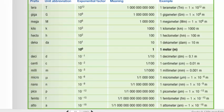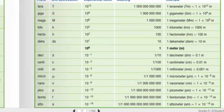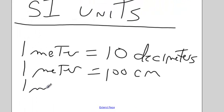Milli is a thousandth, 10 to the minus third is a thousandth. So 1 millimeter is a thousandth of a meter, or 1 meter is 1,000 millimeters.